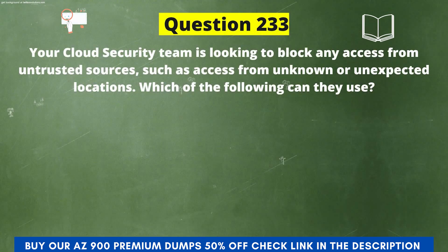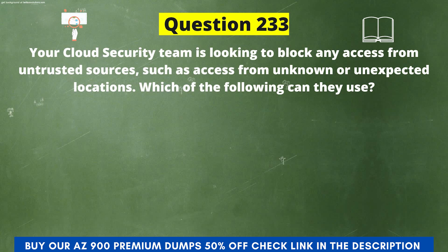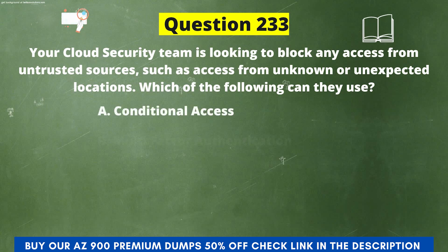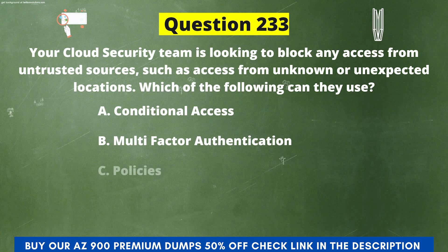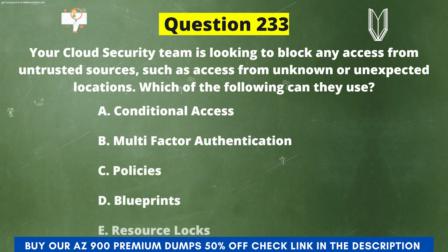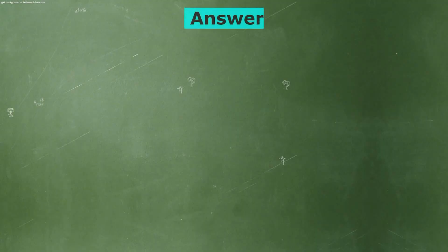Next question: Your cloud security team is looking to block any access from untrusted sources, such as access from unknown or unexpected locations. Which of the following can they use? The options are: A) Conditional Access, B) Multi-Factor Authentication, C) Policies, D) Blueprints, E) Resource Locks. The correct answer is option A, Conditional Access.